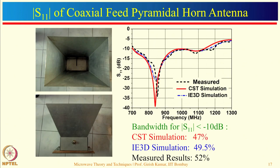Two views of the designed pyramidal horn antenna are shown with the coaxial feed visible from the side. Simulation was performed using IE3D as well as CST software. The bandwidth for S11 less than −10 dB is approximately 47 percent from IE3D simulation, 49.5 percent from CST, and the measured bandwidth is of the order of 52 percent. These results are in reasonably good agreement.